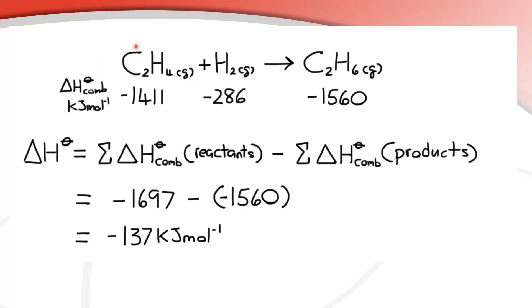Here's an example: we're going to calculate the enthalpy change for ethene reacting with hydrogen to make ethane, using standard enthalpy changes of combustion. The values in kJ/mol are: ethene is negative 1411, hydrogen is negative 286, and ethane is negative 1560. Using the equation — reactants minus products — we substitute the values: negative 1697 minus negative 1560, giving an enthalpy change of negative 137 kJ/mol.